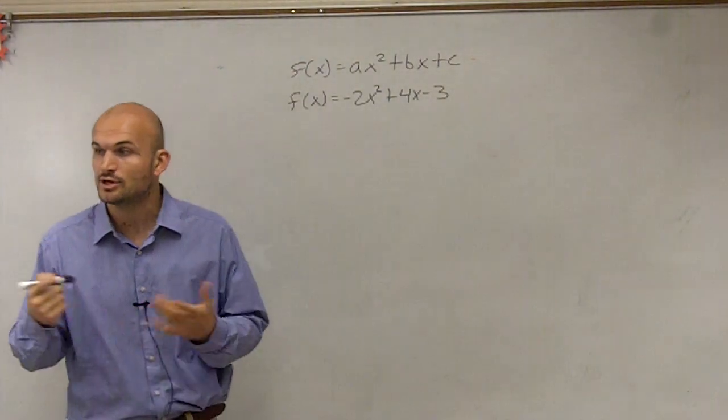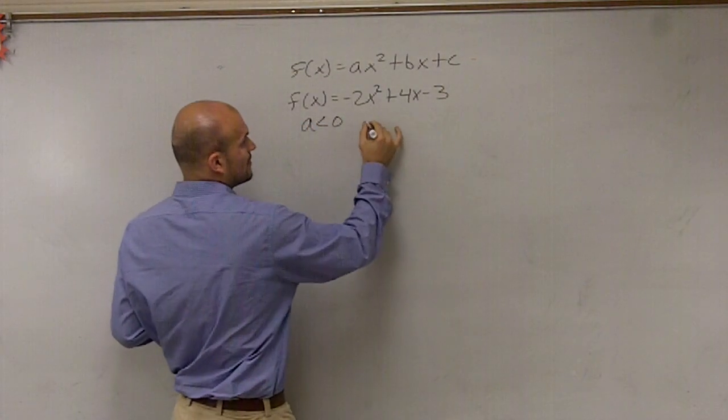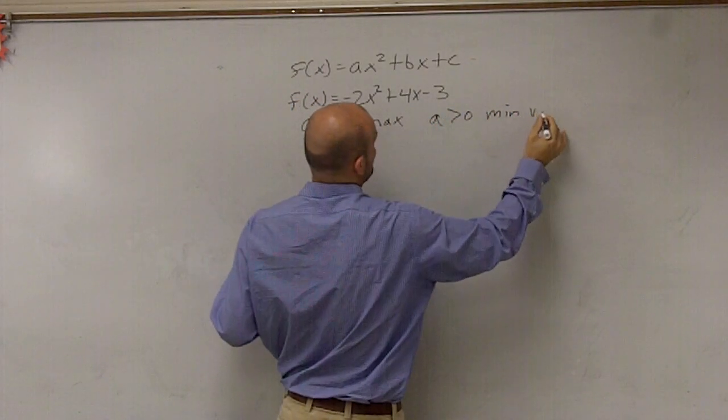To determine the max or the min, we go back to our rule that was in our notes. If a is less than 0, then we have a max value. And if a is greater than 0, then we have a min value.